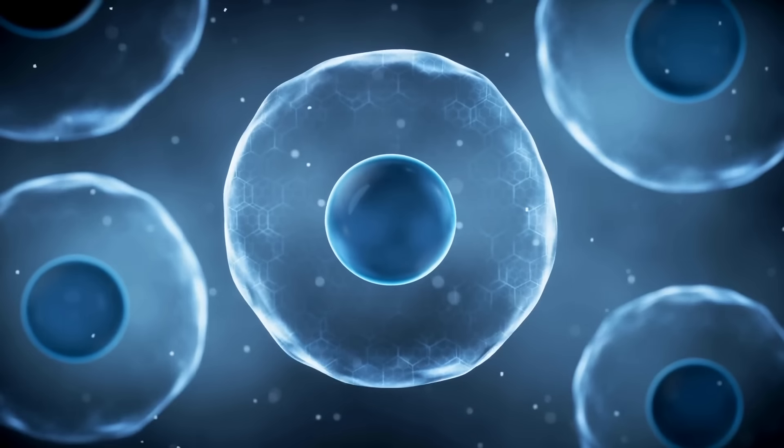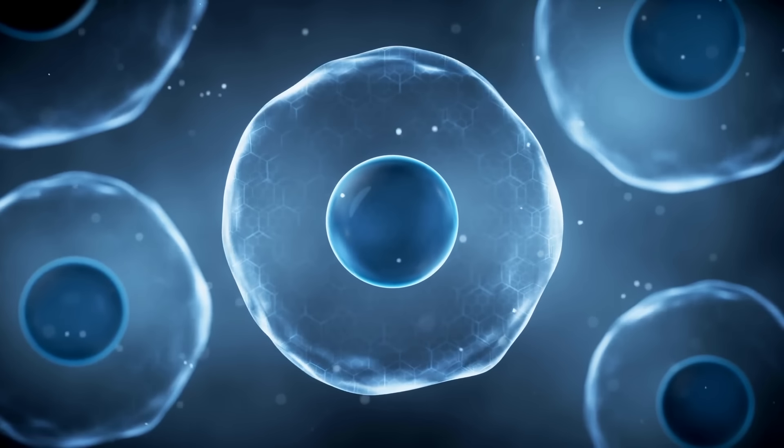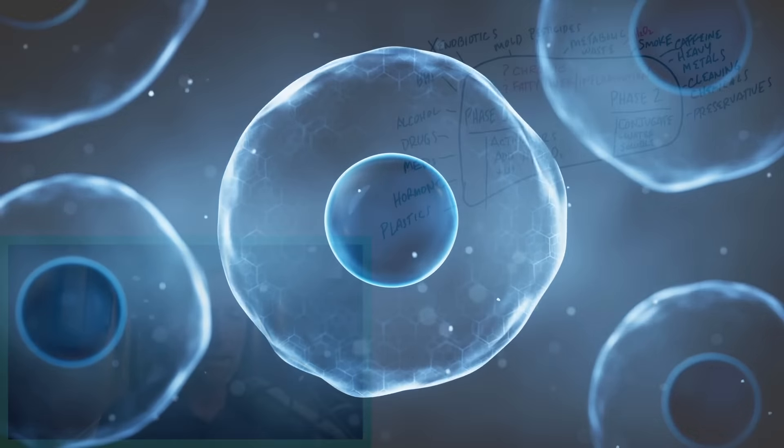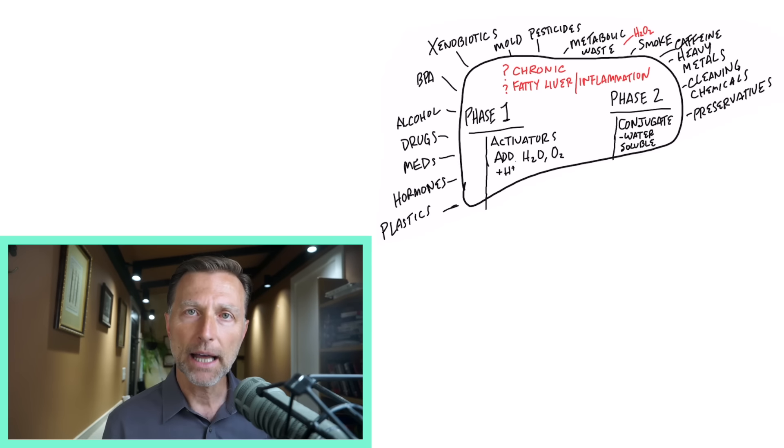You have some powerful, amazing things that happen in that cell. They go through like this assembly line of enzymatic changes. Got phase one and phase two. And then phase three is just the full elimination of that toxin.